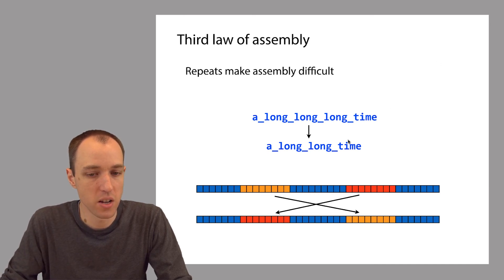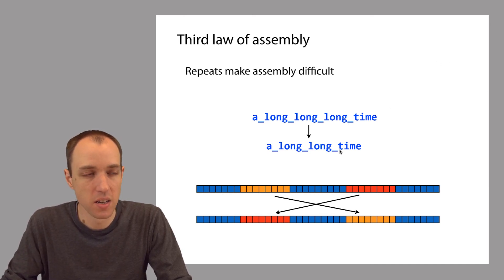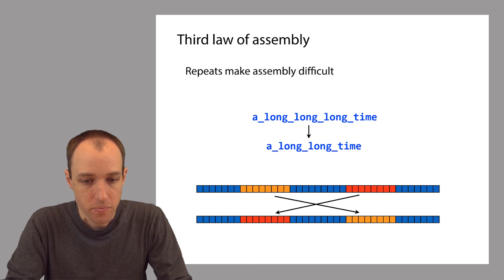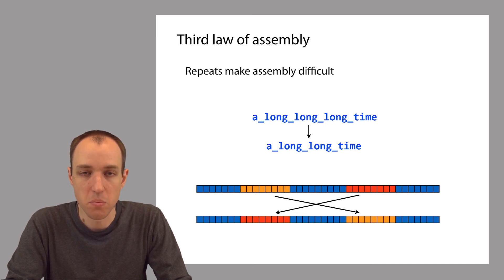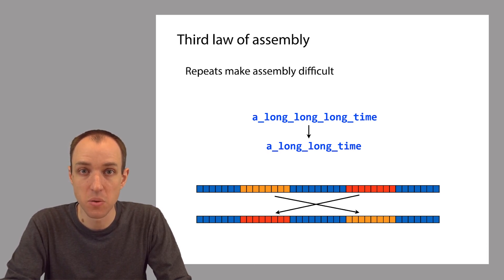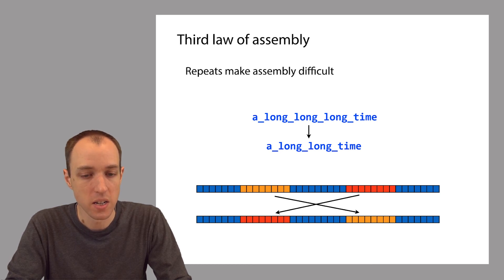We just saw this issue with the shortest common super string problem. Whether you're using the slow algorithm or the greedy algorithm, you get the phenomenon where many copies of a repeat get accidentally collapsed into fewer copies. Other algorithms, when they fail, make different kinds of mistakes. For example, we might take two very distant portions of the genome and be tricked into switching them around because of some repetitive sequence between them that made it impossible to know exactly where each copy went.